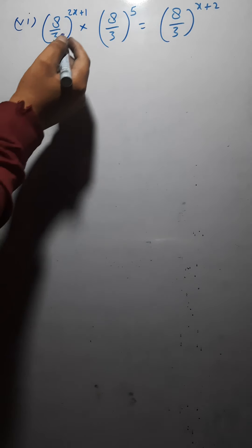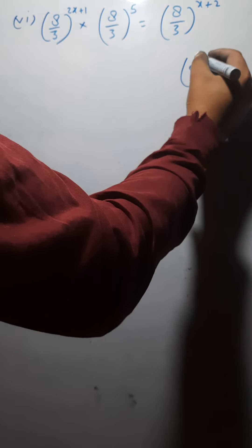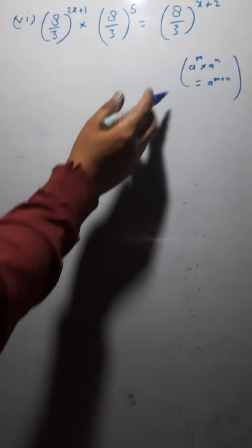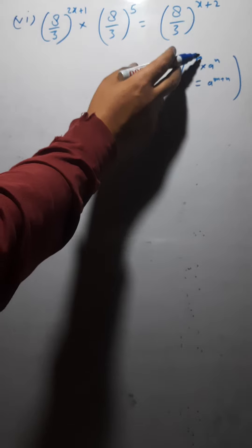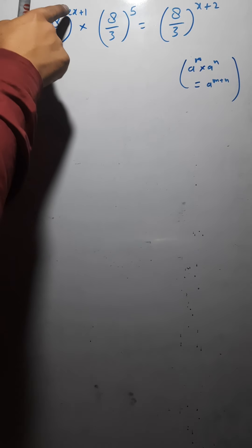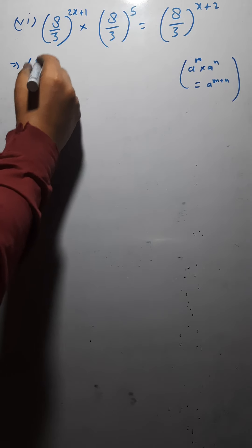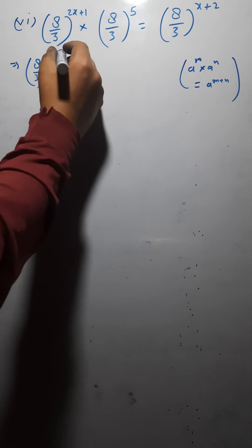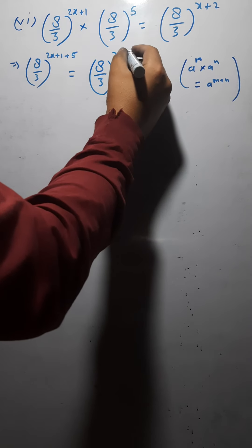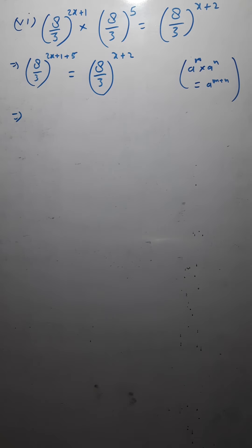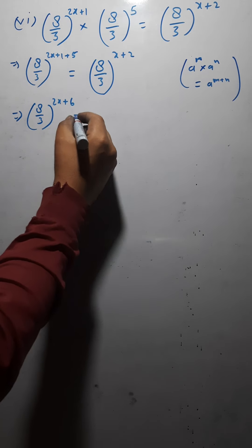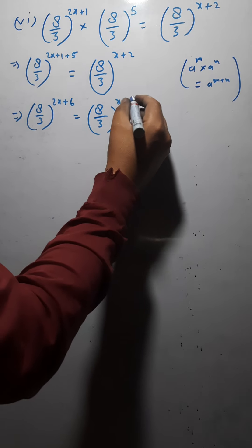Similar to the previous question. Since the sign is multiplication, we add the exponents: a raised to the power m multiplied by a raised to the power n gives a raised to the power m plus n. So I write (8/3) raised to the power 2x plus 1 plus 5. Since 5 plus 1 is 6, this becomes (8/3) raised to the power 2x plus 6, which equals (8/3) raised to the power x plus 2.